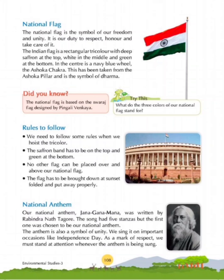Our national anthem Jana Gana Mana was written by Rabindranath Tagore. The song had five stanzas, but the first one was chosen as our national anthem. The anthem is also a symbol of unity. We sing it on important occasions like Independence Day. As a mark of respect, we must stand at attention whenever the anthem is being sung.